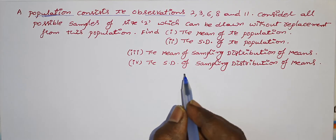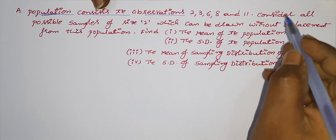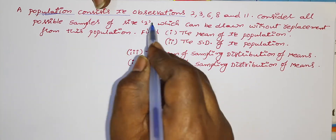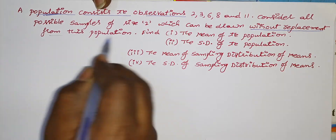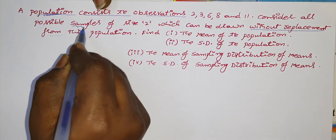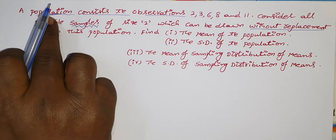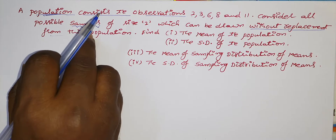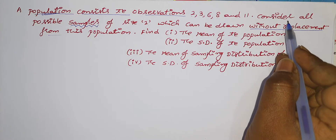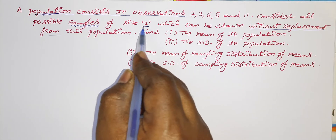A population means a group of observations — any group of observations is called a population. Consider all possible samples of size 2 which can be drawn without replacement from this population. A sample means a part, otherwise a subset, of the population.